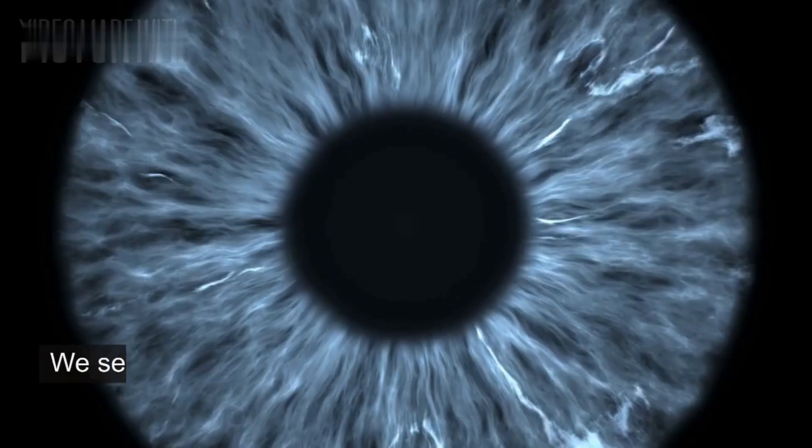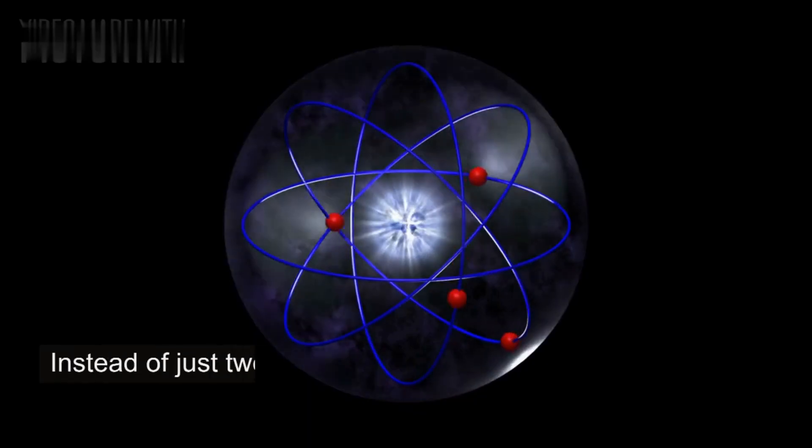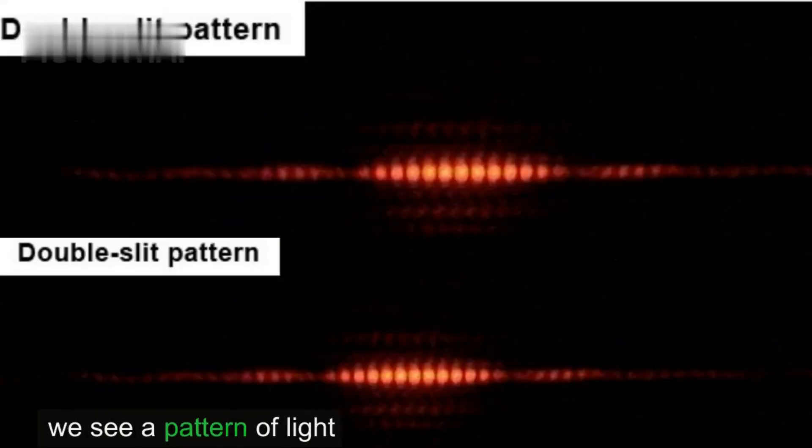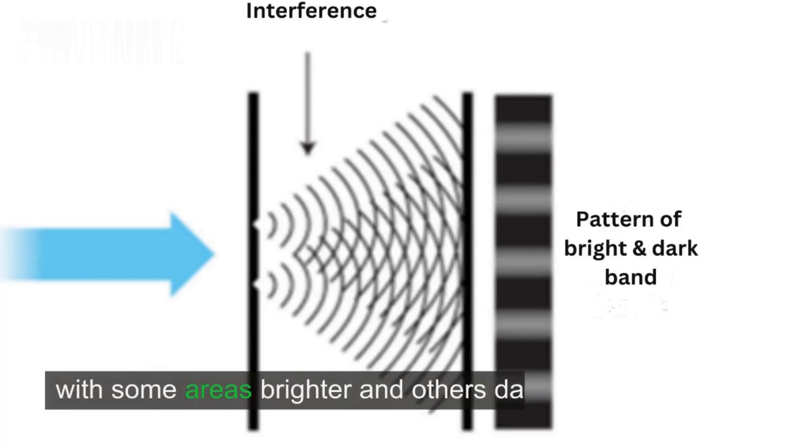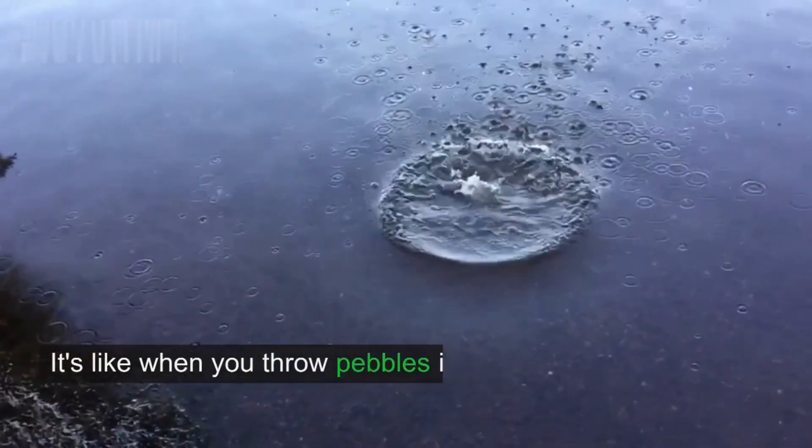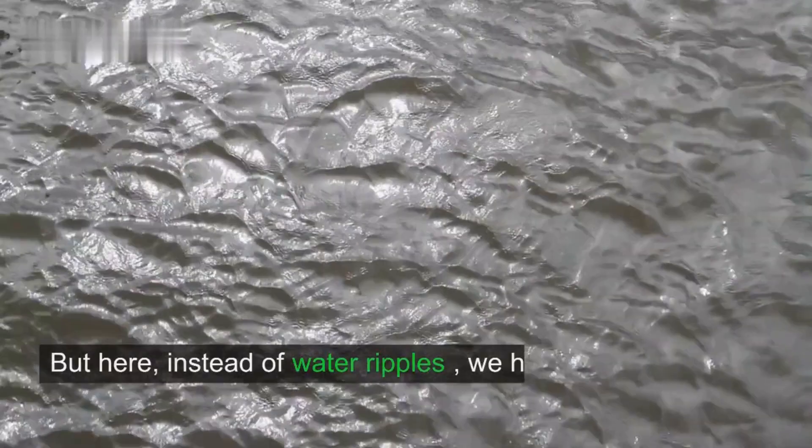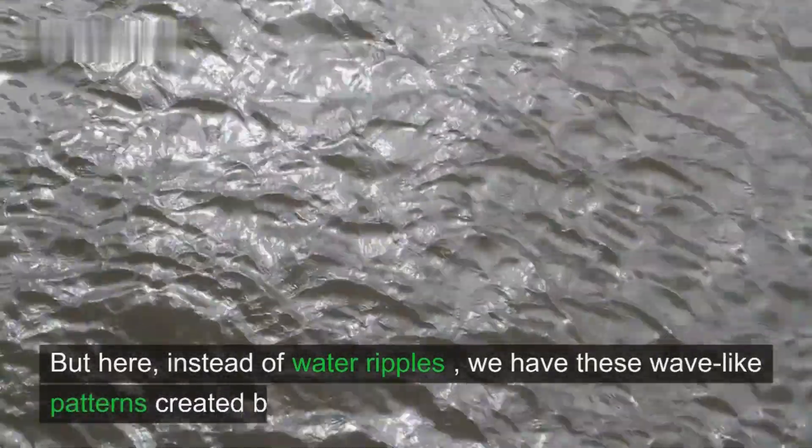But it gets even weirder. We see something amazing. Instead of just two piles of electrons forming behind the two openings, we see a pattern of light and dark stripes on the screen. It looks like a series of bands, with some areas brighter and others darker. It's like when you throw pebbles into a pond and the ripples from different places overlap and create patterns. But here, instead of water ripples, we have these wave-like patterns created by the electrons.